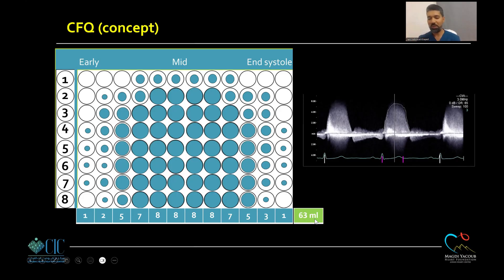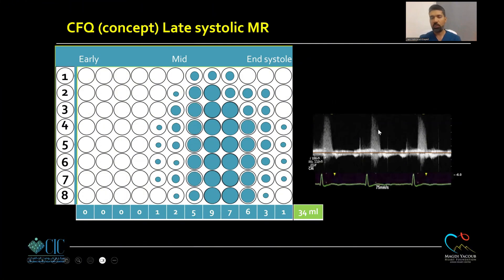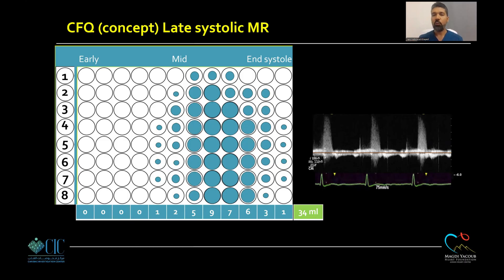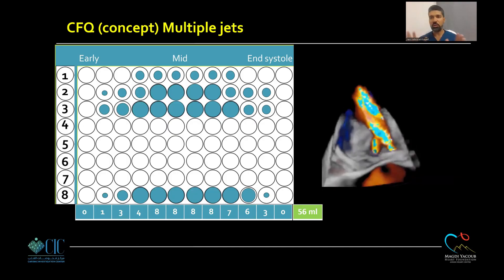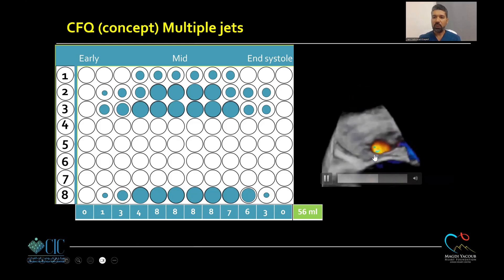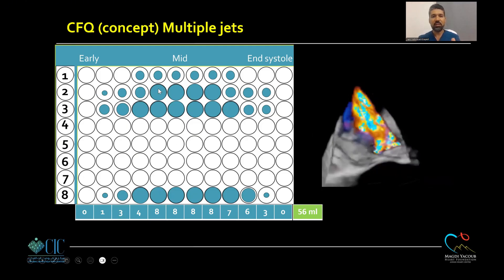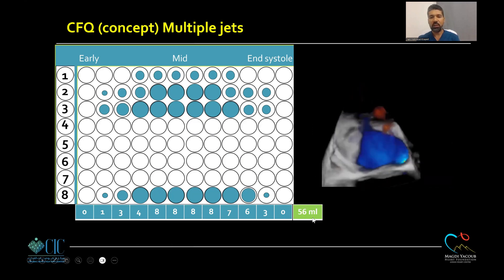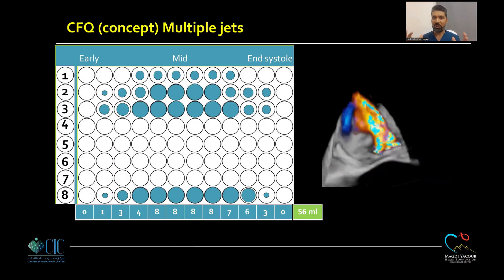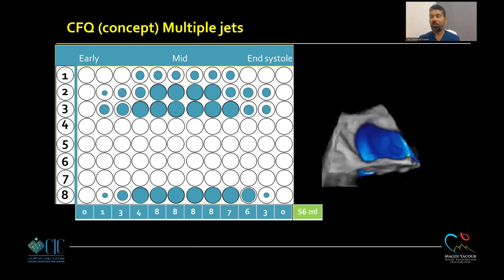For multiple jets — a problem not tackled by the PISA method — some holes in one location leak, other holes in another location leak, and holes in between do not leak at all. Everything is still calculated and you get the cumulative mitral regurgitation volume that passed through all pinholes throughout the entire cardiac cycle. This is how the pinhole model handles any orifice shape, any timing, and any number of jets.